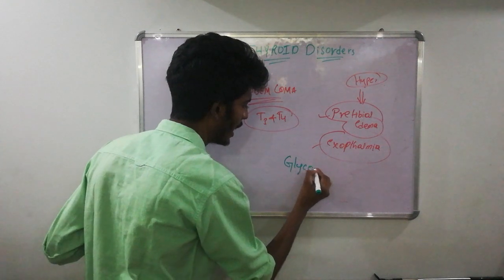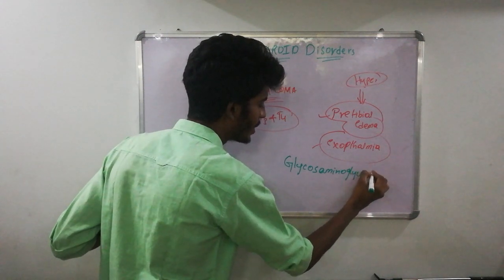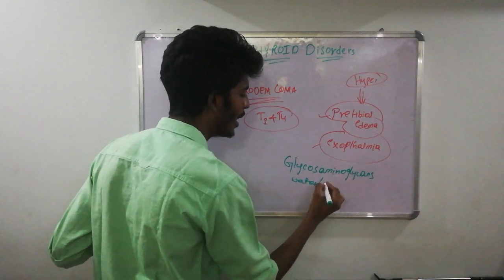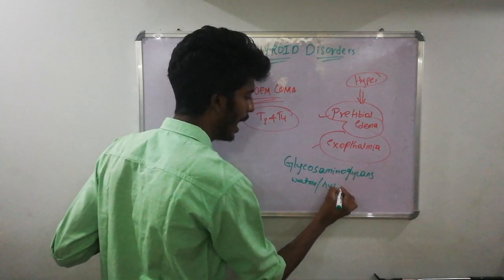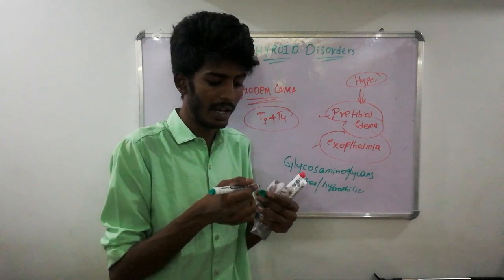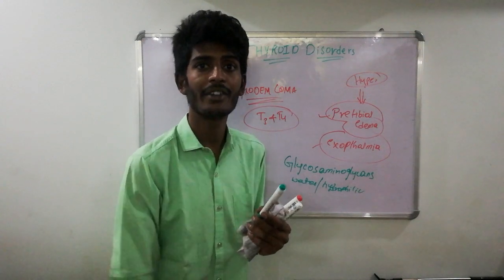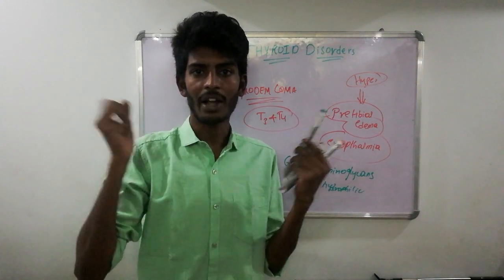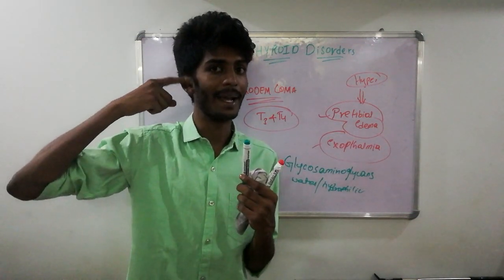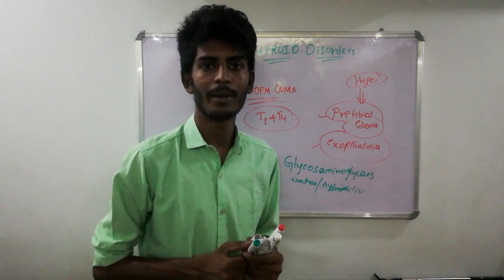Pretibial edema and exophthalmos occur in hyperthyroidism because elevated metabolism leads to the production of glycosaminoglycans — hydrophilic (water-attracting) compounds. These glycosaminoglycans accumulate in the pretibial region and behind the eye, causing fluid accumulation that results in pretibial edema and exophthalmos. This concludes the story of hyperthyroidism and hypothyroidism and their treatment.